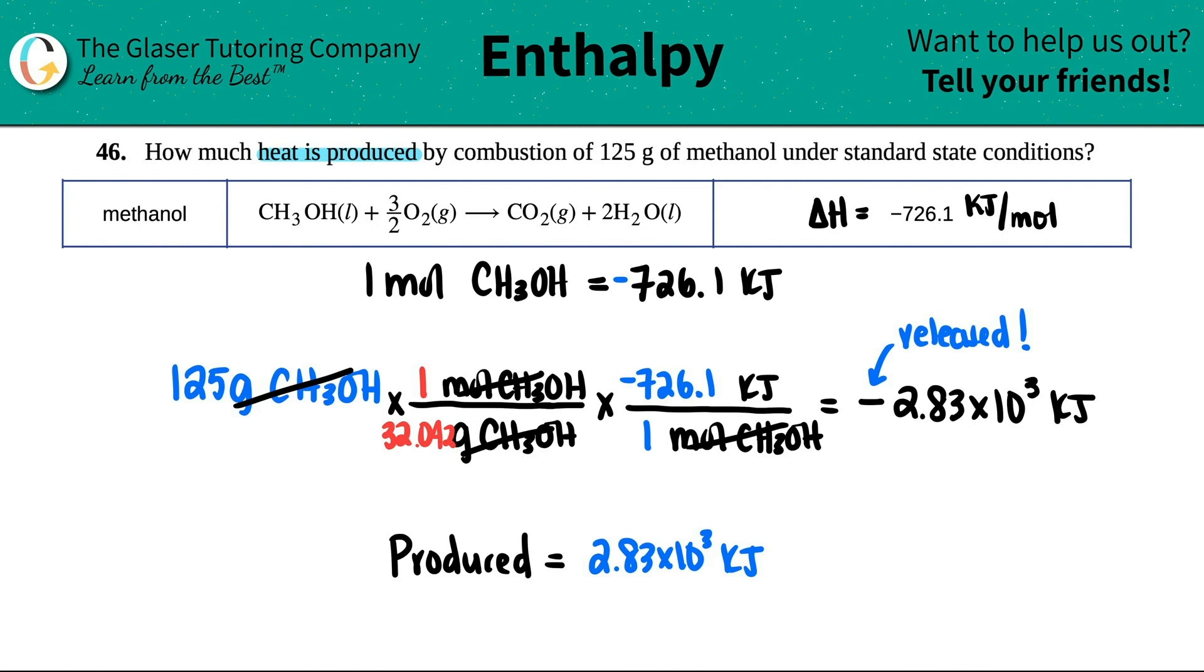When they're asking for production, you don't put the negative because technically you can't produce a negative amount of heat. The negative, I keep sounding like a broken record, but I just want to make sure you guys get it. The negative just means that it's being released.